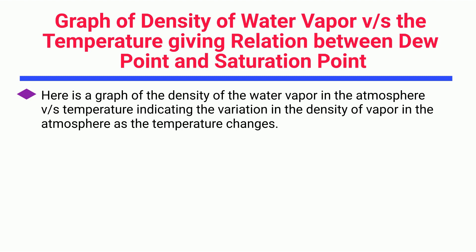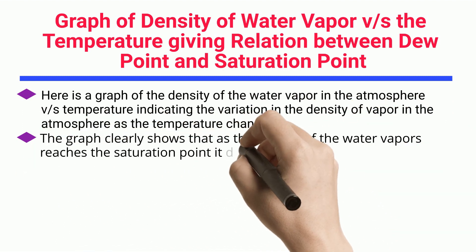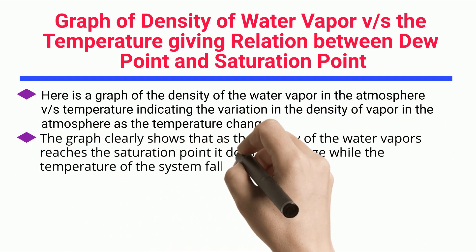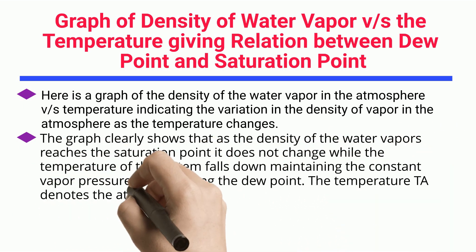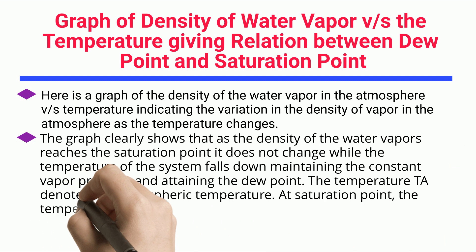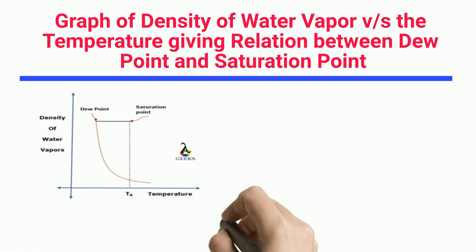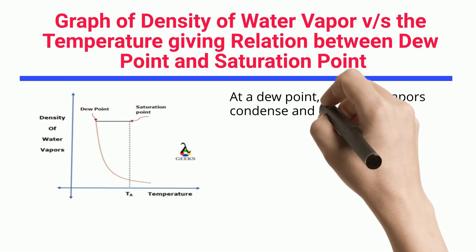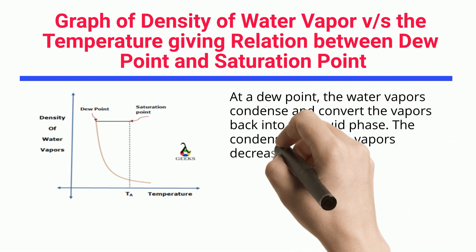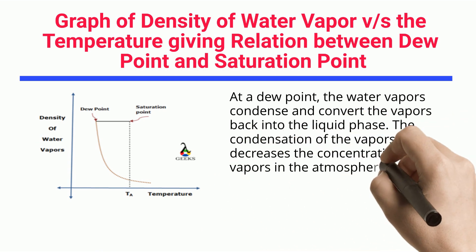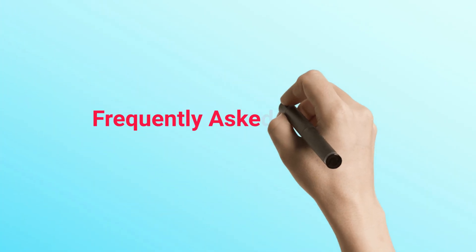At the dew point, water vapors condense and convert back into the liquid phase. The condensation of vapors decreases the concentration of vapors in the atmosphere, and thus the density of water vapors drops exponentially. This is also shown in the graph of density of water vapor in the atmosphere versus temperature, which indicates the variation in vapor density as temperature changes.